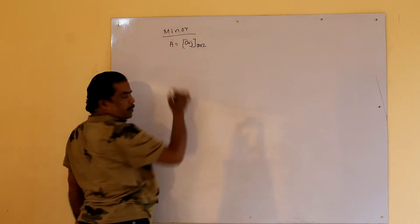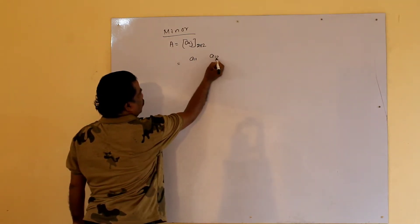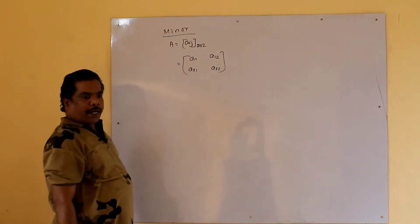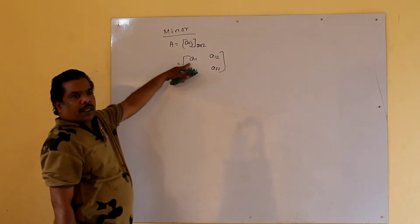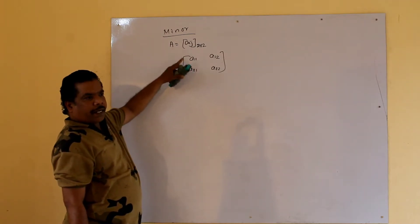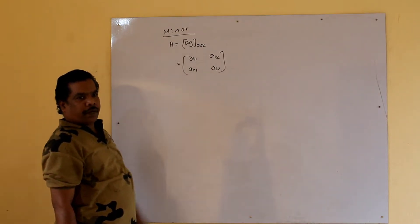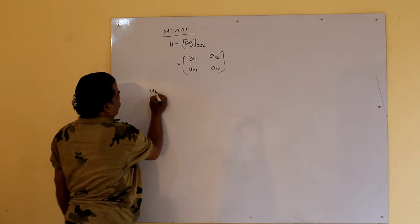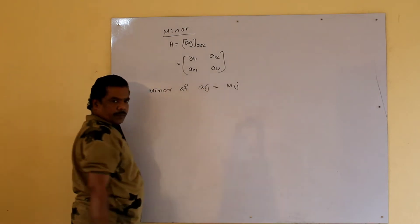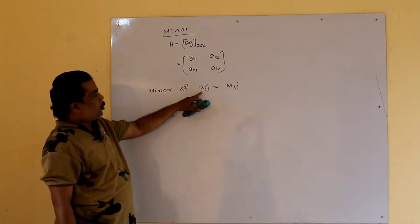Minor of a square matrix — in the exam, the matrix has elements A11, A12, A21, A22. The minor of an element A_ij is obtained by deleting the row and column it is present in. So minor of A_ij equals M_ij, obtained by deleting or canceling or suppressing the i-th row and j-th column.